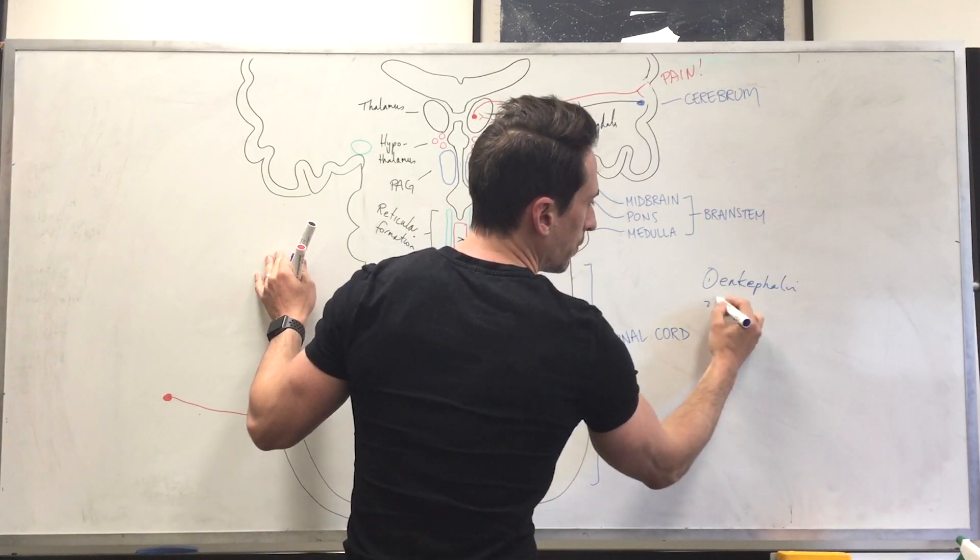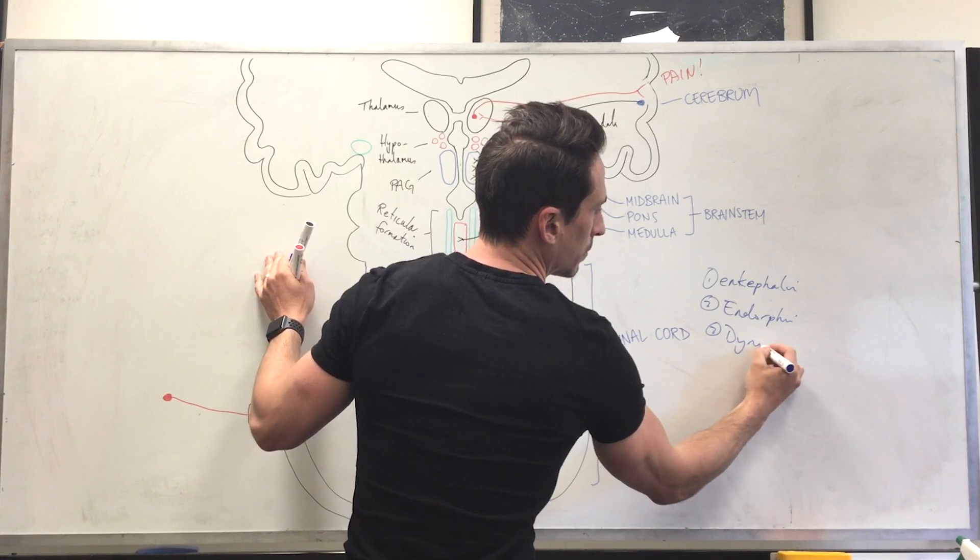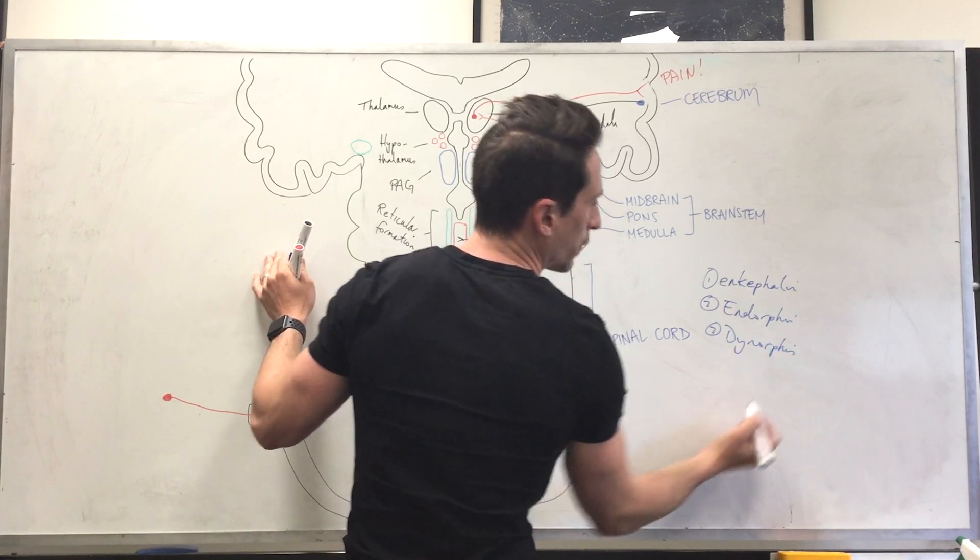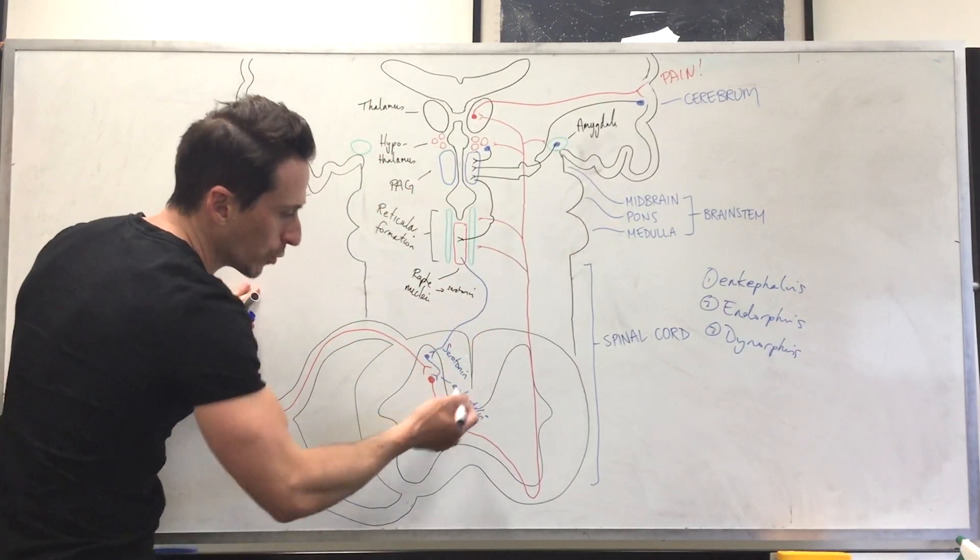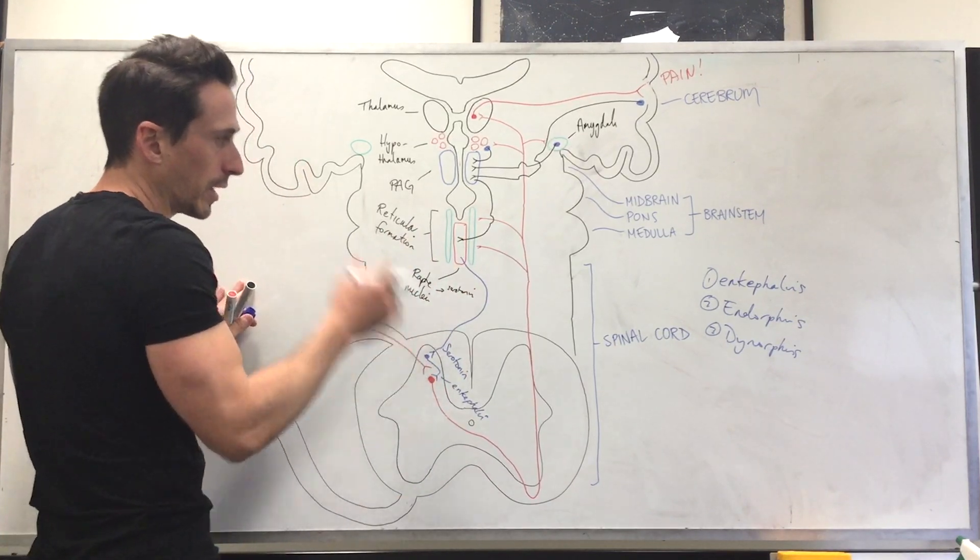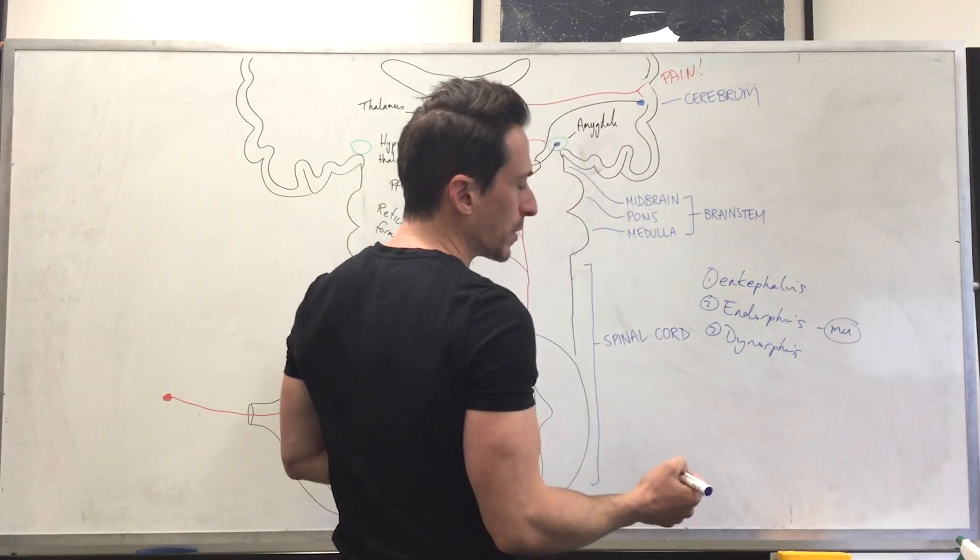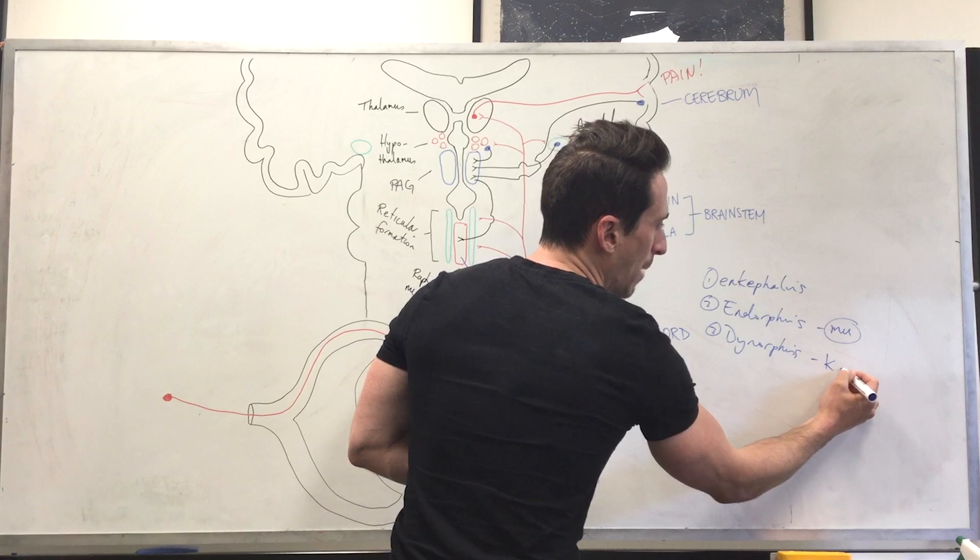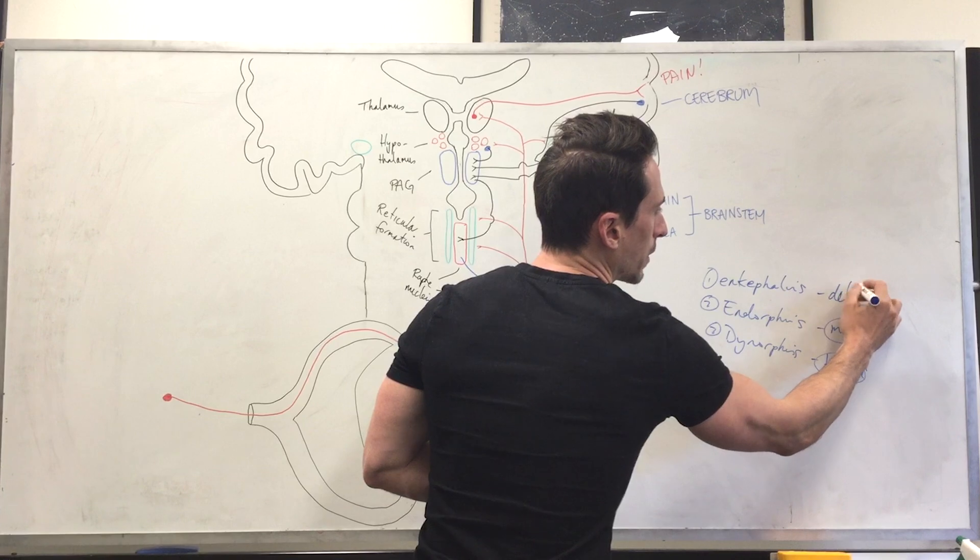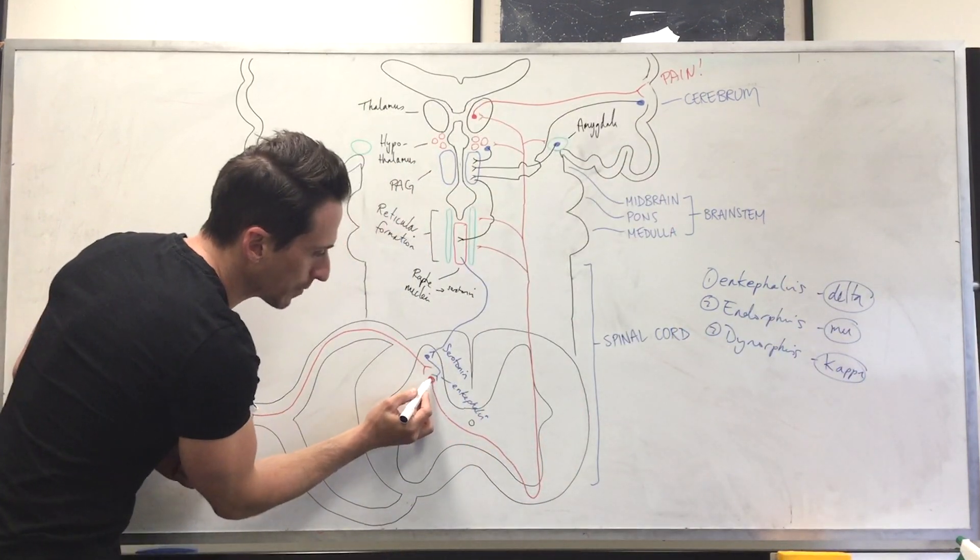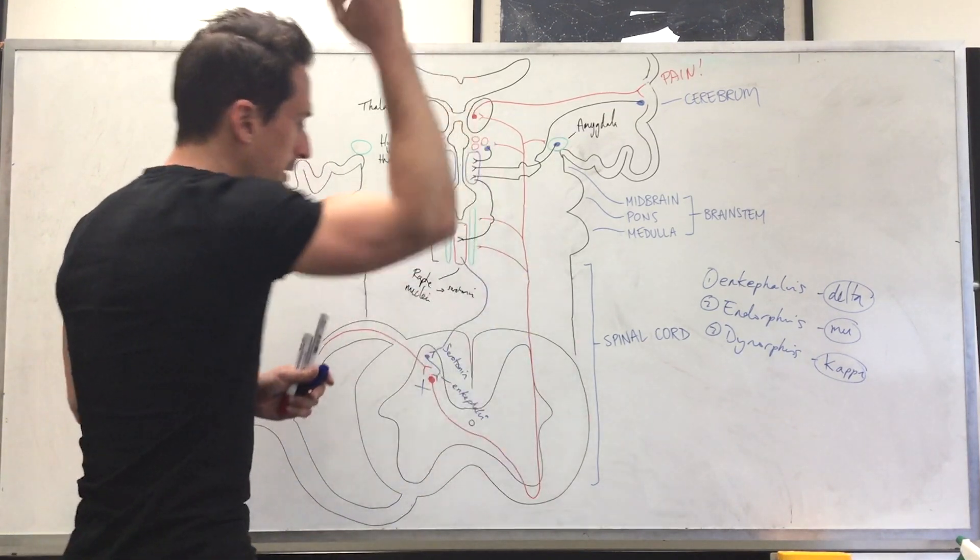The three endogenous opioids that we're going to find is that the endorphins will bind to the mu receptor. You're going to find that the dynorphins bind to the kappa receptor, and that the enkephalins bind to the delta receptor, which means here, we've got delta receptors on the pain receptor, on this pain neuron, and it stops the pain neuron from sending the signal up.